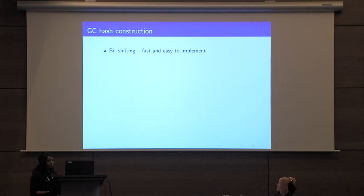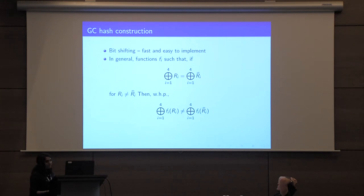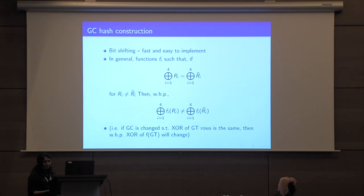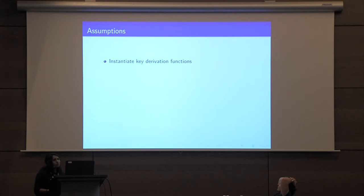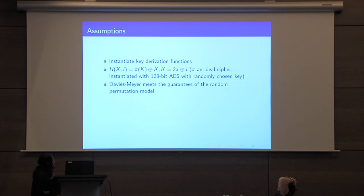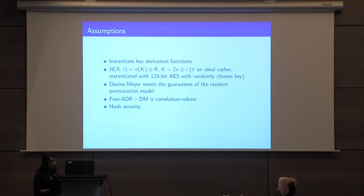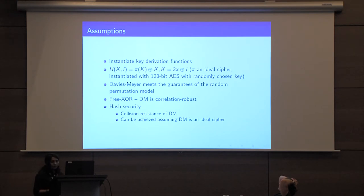We use bit shifting for our translation functions because it is both fast and easy to implement. In general, we want functions F_i such that if a garbled circuit is modified so the XOR of the rows remains the same, then with high probability the XOR of F of the garbled rows will change. This is sufficient to prove security of our construction. We instantiate the key derivation functions with the Davies-Meyer construction, assumed to be a random permutation. To be compatible with free XOR we also assume correlation robustness. To prove hash security we additionally require collision resistance of Davies-Meyer, which can be achieved assuming it is an ideal cipher.